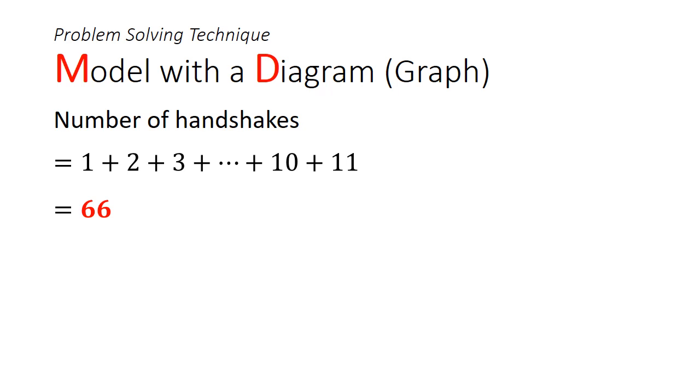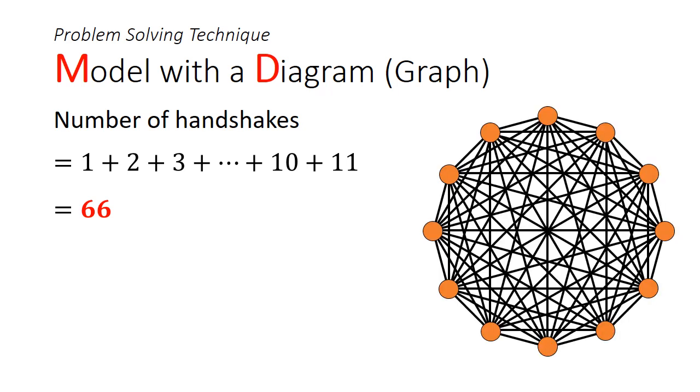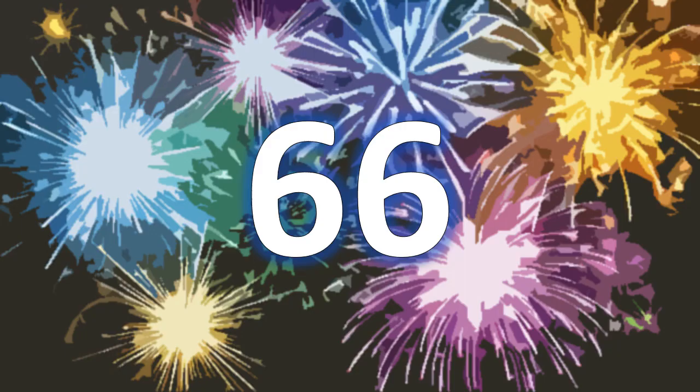As the number of handshakes are small, it's not hard to brute force an answer by adding up all the integers from 1 to 11 to get 66. In fact, this is how the graph would look like. So, did you get the answer?